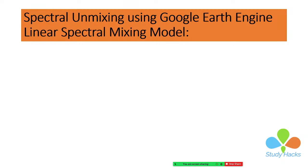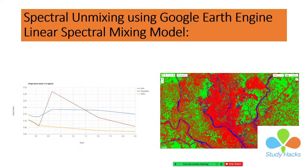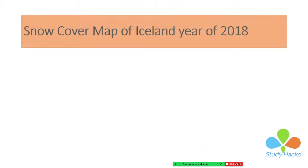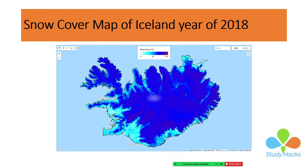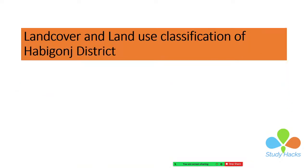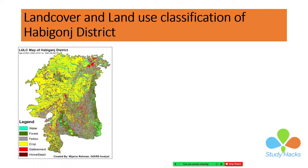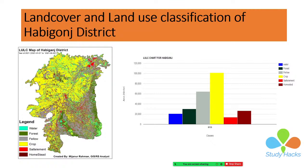This is another project for spectral unmixing. Mainly here I use the linear spectral mixing model to classify bare land, vegetation, and water. This is another project — a land cover classification map for the Habiganj district. Mainly we use ground truth data to identify water body, forest, fallow land, grove, settlement, and homestead. Then we can easily make the map and calculate the area — how much water body, forest, fallow land, grove land, settlement, and homestead is available in the region. We can also calculate it using a chart.